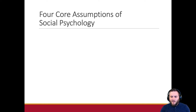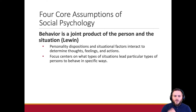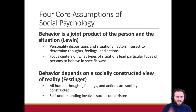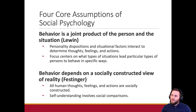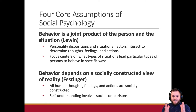The four core assumptions of social psychology: Assumption one — behavior is the joint product of the person and the situation, as we just said. Assumption two — from Festinger — behavior depends on the socially constructed view of reality. Reality may appear objective, but it's probably 100% unattainable in that pure sense with the way humans work. Anything from a human — thoughts, feelings, behaviors — comes from a socially constructed point of view.